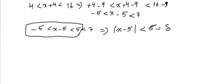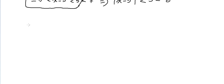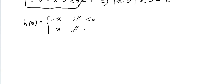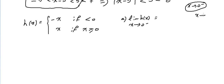Let me do another one. Show that the function H, given by H(X) = minus X if X is less than zero, and H(X) = X if X is greater than or equal to zero. Part A: find the limit of H(X) as X approaches zero minus. X approaches zero from the left means X is less than zero, so we use H(X) = minus X.